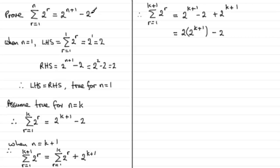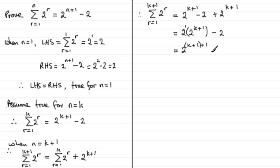The minus 2 is looking good because we need that. Now, when multiplying two numbers to the same base, you just add the powers — this 2 is 2 to the power 1. So 2 times 2 to the power k plus 1 gives 2 to the power k plus 1 plus 1, putting k plus 1 in brackets. That gives us 2 to the power k plus 2 minus 2, so it's true for n equals k plus 1.